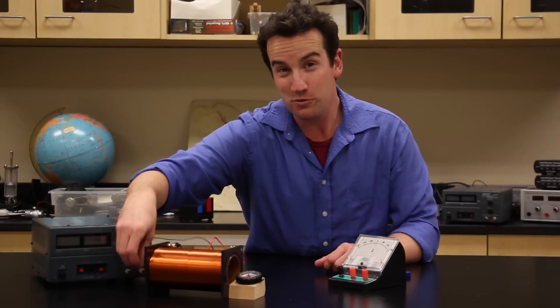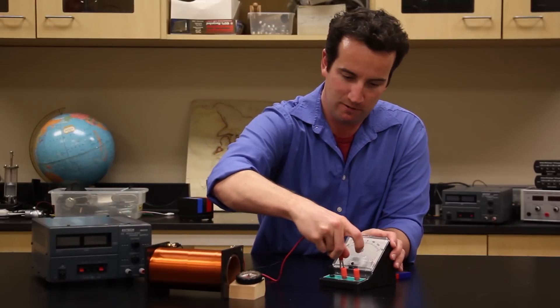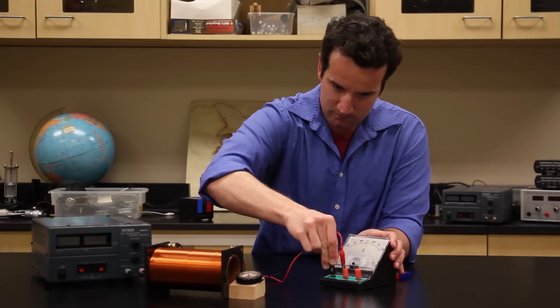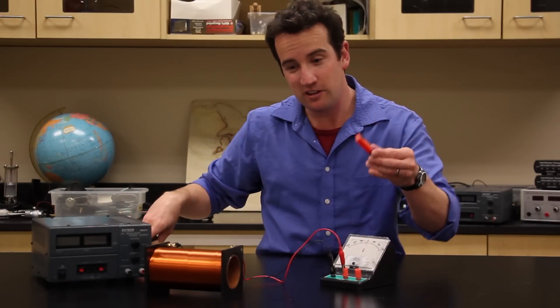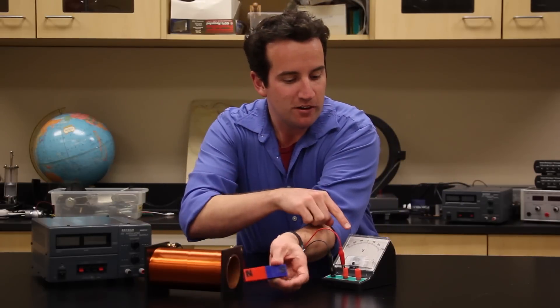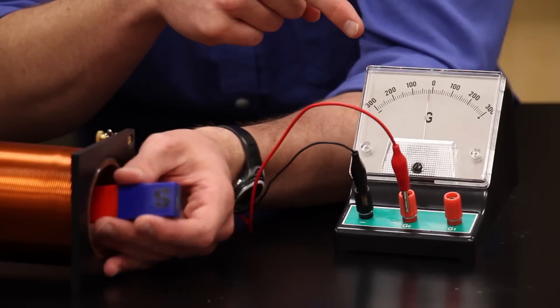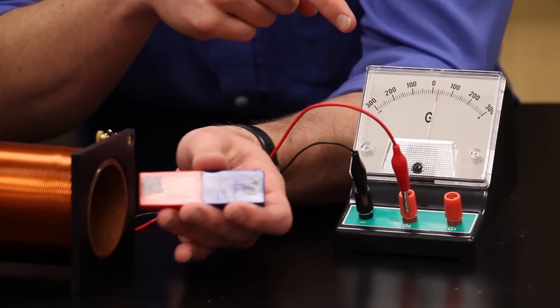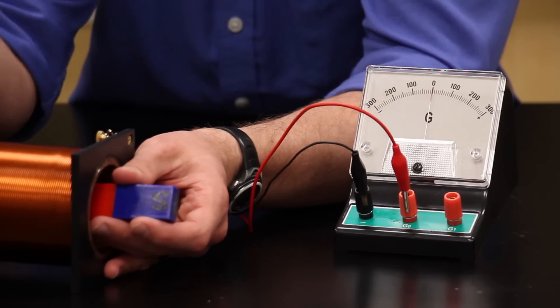Now we perform the reverse experiment. When I move this magnet through the coil, the galvanometer indicates that a current is flowing. Notice that when I hold the magnet still, no current is produced.